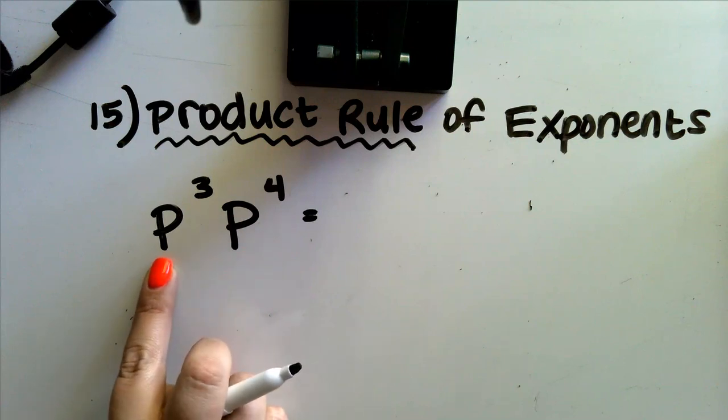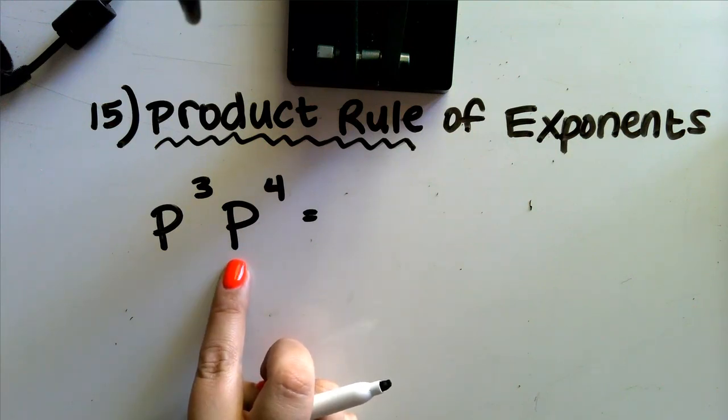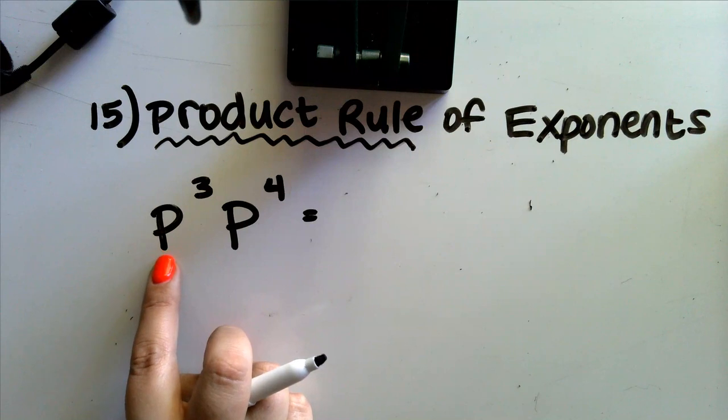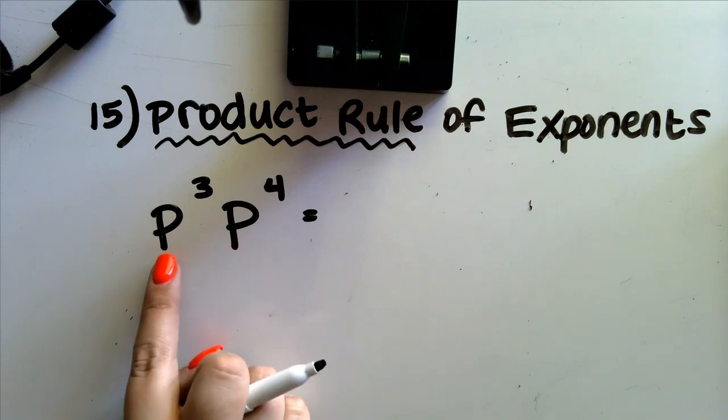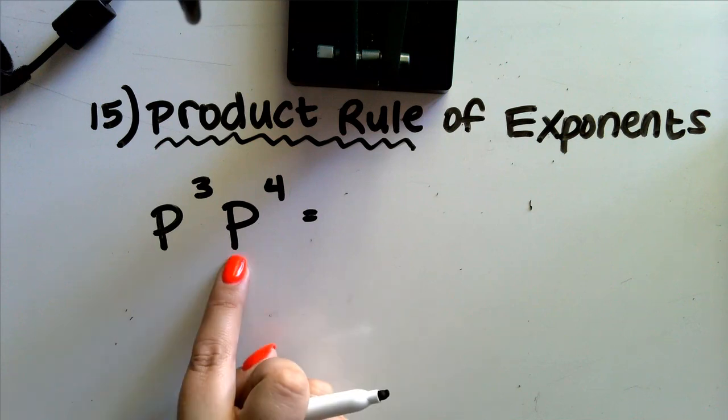We're multiplying p to the third times p to the fourth. What I also want us to notice here is that both terms, p to the third and p to the fourth, have the same base: p.